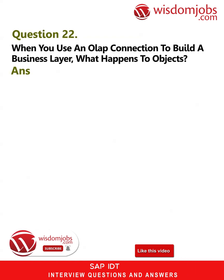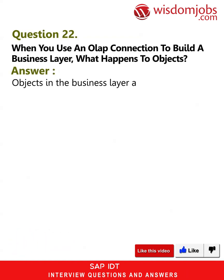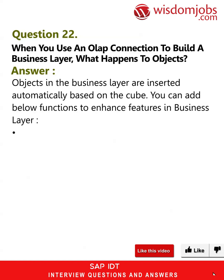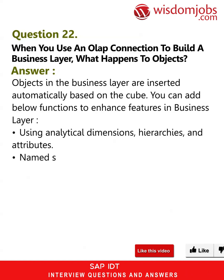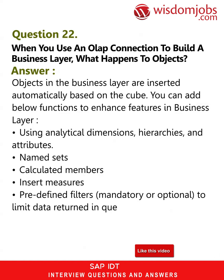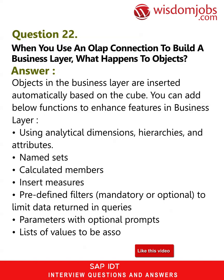Question 22: When you use an OLAP connection to build a business layer, what happens to objects? Answer: Objects in the business layer are inserted automatically based on the cube. You can add the following functions to enhance features in the business layer: analytical dimensions, hierarchies and attributes, named sets, calculated members, insert measures, predefined filters — mandatory or optional — to limit data returned in queries, parameters with optional prompts, and lists of values to be associated with a prompt.